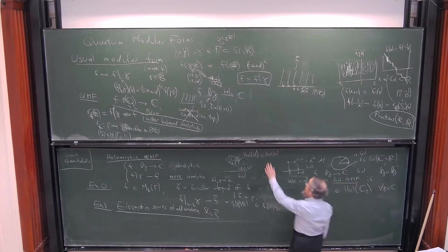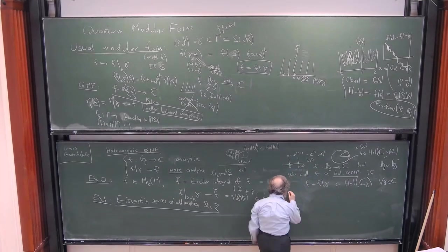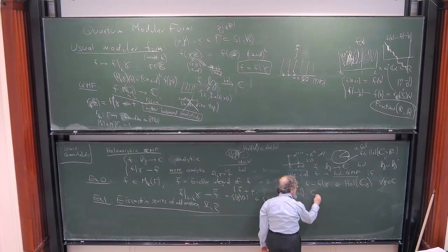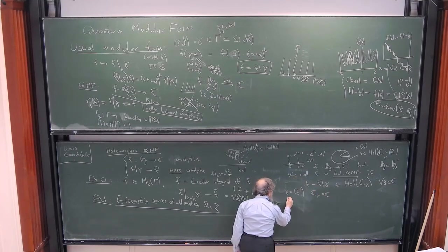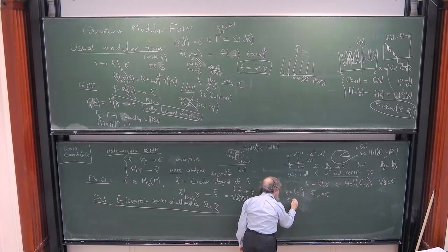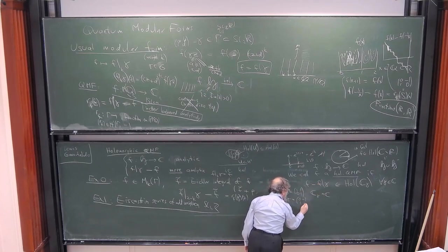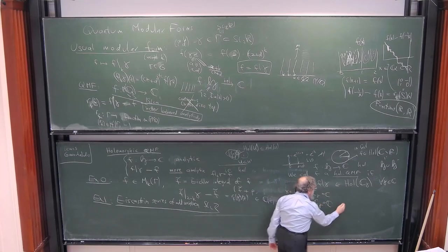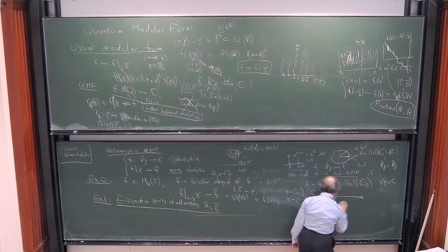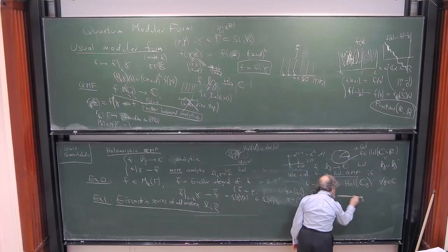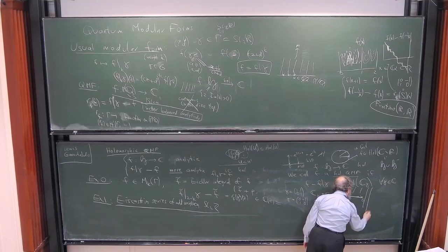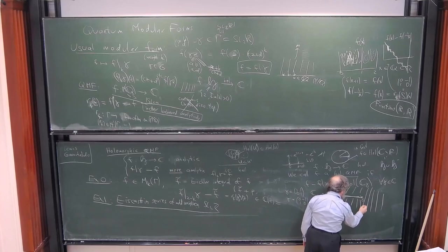So we call f a holomorphic quantum modular form — I won't make an actual definition because I'll move the board up in a second — if f minus f slash γ (again, there could be a weight and then you have to put that weight in) should be holomorphic not in ℂ, but in ℂ_γ for all γ in the group. And ℂ_γ is the cut plane. So if γ is the translation, ℂ_γ is everything. But if γ = S = (0,-1; 1,0), then ℂ_γ is what's usually called ℂ', the cut plane — ℂ minus the closed negative real axis. So you take all points which are either in the upper or lower half plane, or strictly positive real numbers.